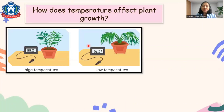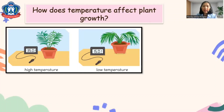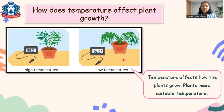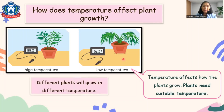How does temperature affect plant growth? The first one is in a high temperature, and the second one is a low temperature. Temperature affects how the plants grow — plants need a suitable temperature, and different plants will grow in different temperatures.